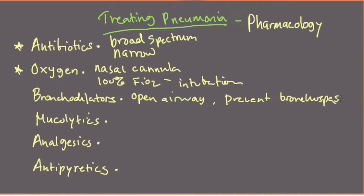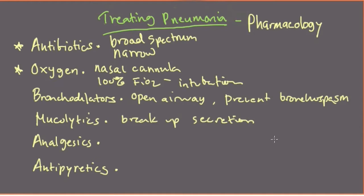Bronchodilators help the patient get more air down into the lungs and prevent the airways from spasming, which would only add insult to injury in a patient who's already not breathing 100%. Mucolytics are medications, also often vaporized and inhaled, that help break up secretions. Part of the problem with pneumonia is that patients often have secretions sitting deep down in the airways and alveoli. Breathing in these mucolytics helps thin them and helps the patient expectorate and cough them out.